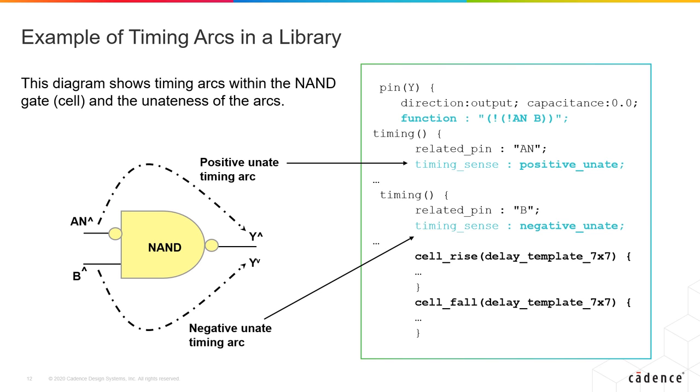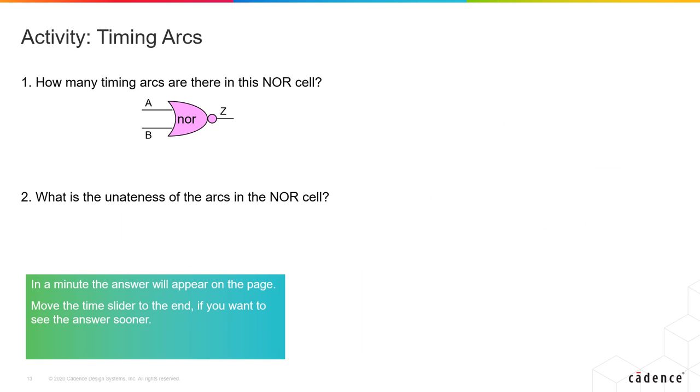U-nateness of the timing arc is specified in the library by the timing sense attribute. When the net B is rising, net Y is falling. Therefore, the timing arc is negative u-nate. When net A is rising, net Y is rising. Therefore, the timing arc is positive u-nate. Try the following activities to reinforce your learning.